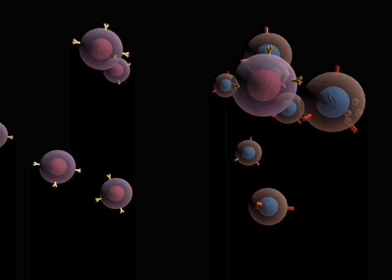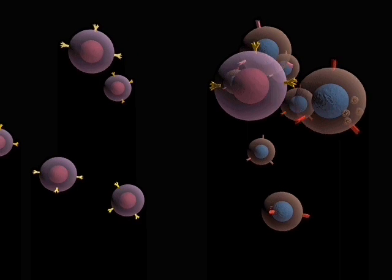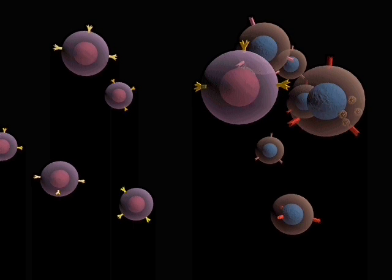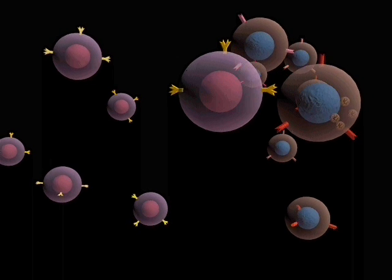This is one of the reasons why lymphocytes circulate around the body to ensure the small number of cells which are able to recognize a specific antigen will actually come into contact with it.